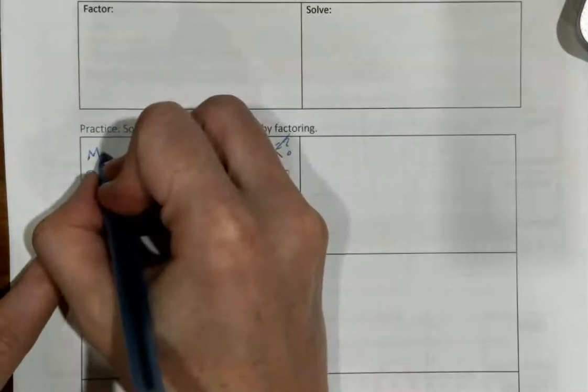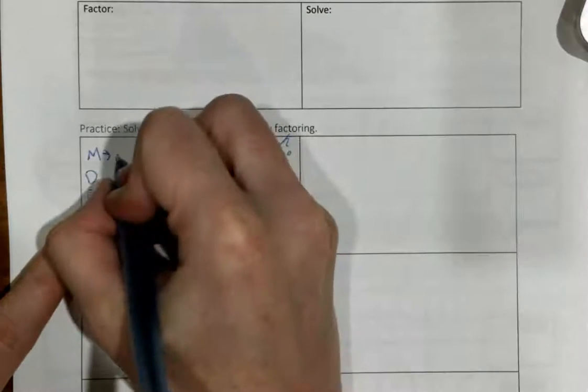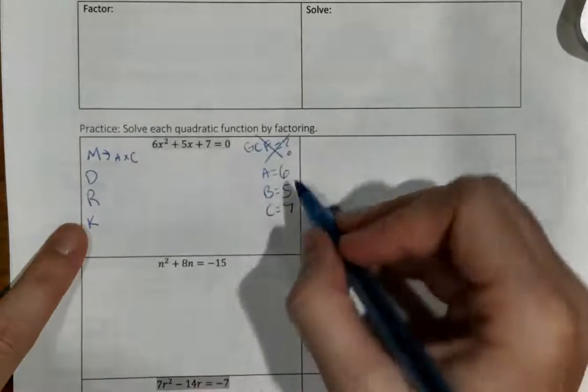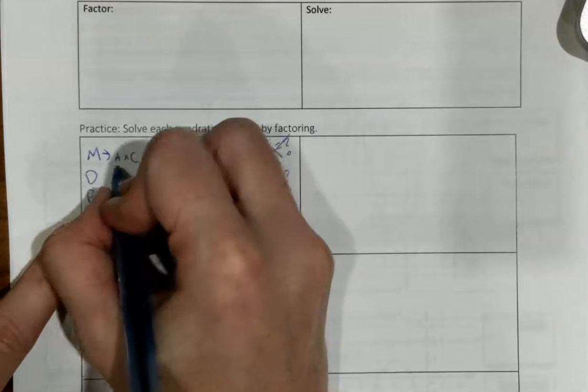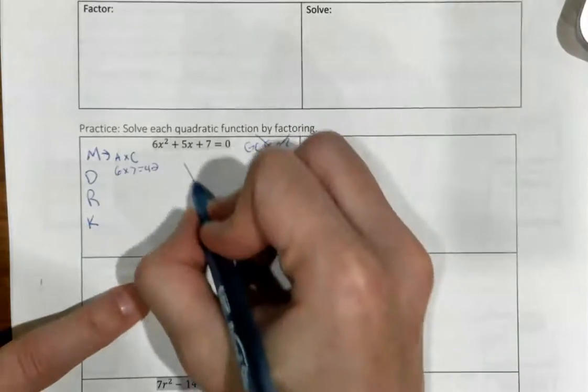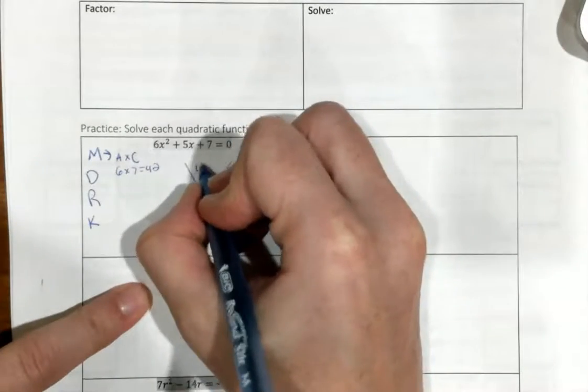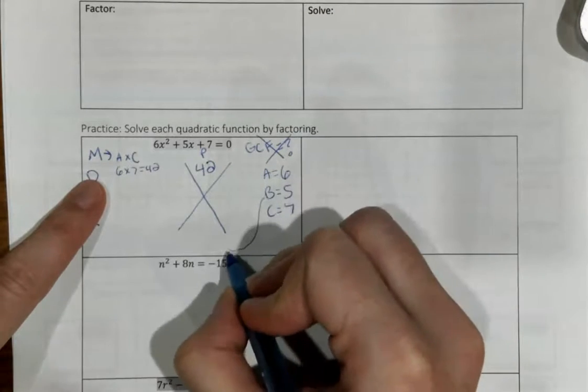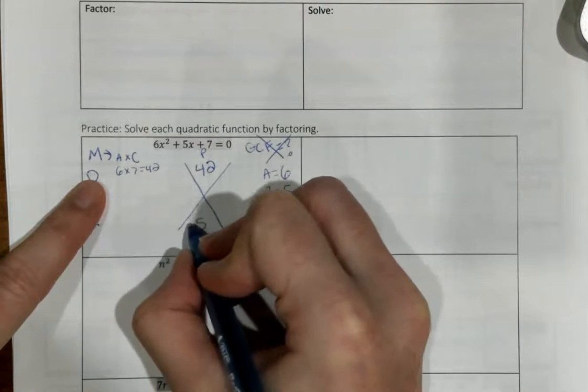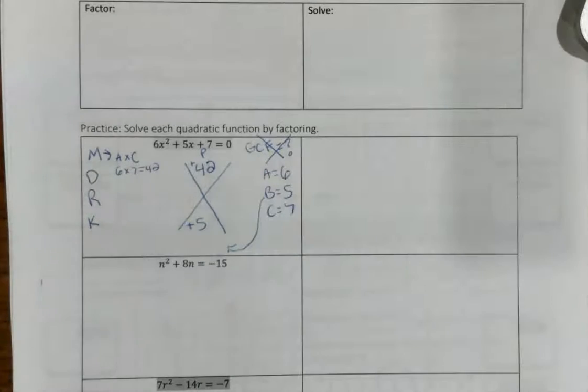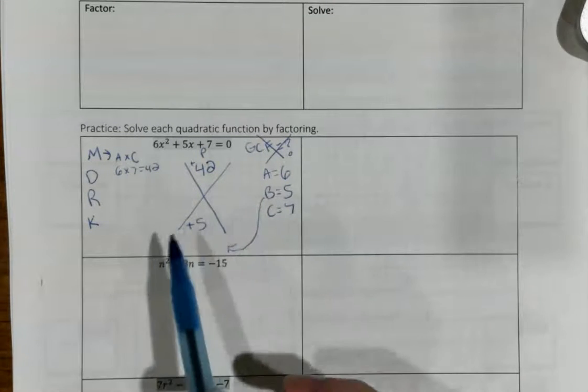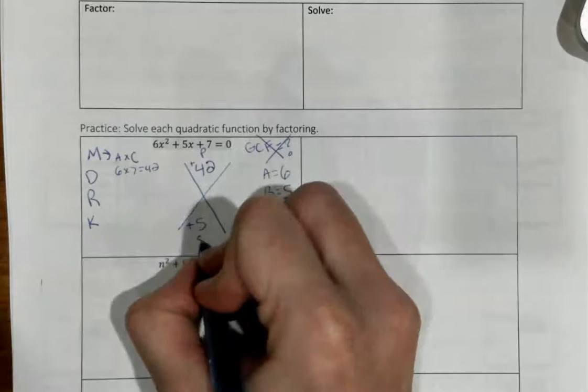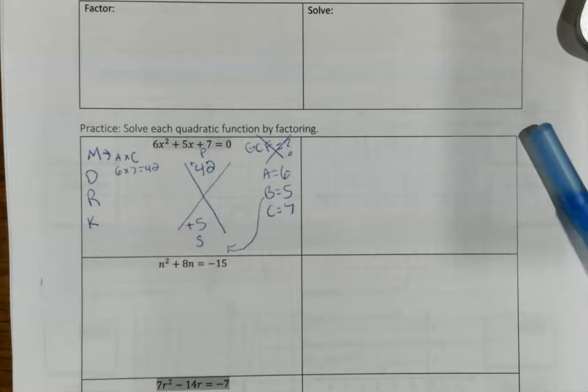Step number one is going to be multiply A times C. So, that means 6 times 7, so 6 times 7 is going to give me 42. And I know I'm going to drop that into the top of my x, a positive 42 up here. We know B goes on the bottom. B stands for bottom, so I'm going to put positive 5 down here.